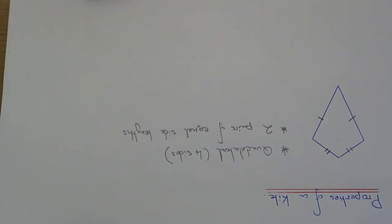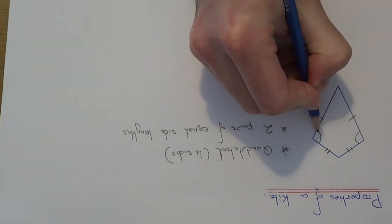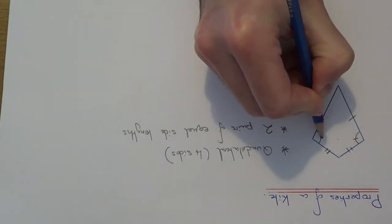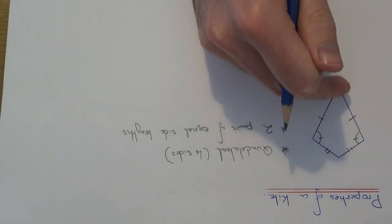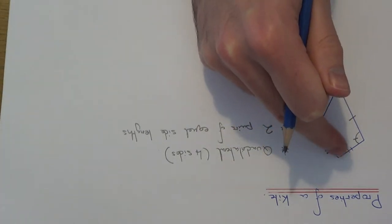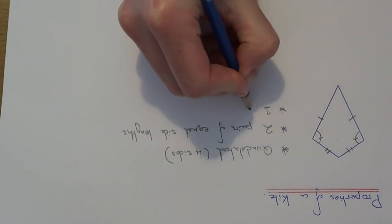Let's look at the angles now. If we look at this angle and this angle here, these two angles are the same. The other two angles are not the same, so we can say it has one pair of equal angles.